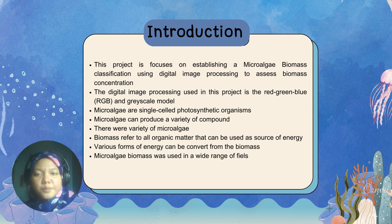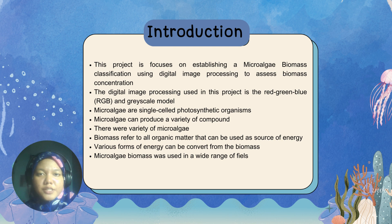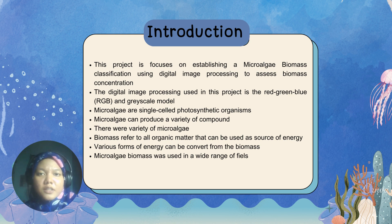This project is focused on establishing a Micro-Algae Biomass Classification using digital image processing to assess biomass concentration. The digital image processing used is the RGB and grayscale model. Micro-algae are single-cell photosynthetic organisms found in aquatic habitats, including fresh water and marine environments, that convert sunlight, water, and carbon dioxide into algae biomass. Micro-algae can produce a variety of compounds like biofuel, pigment, and nutraceuticals.